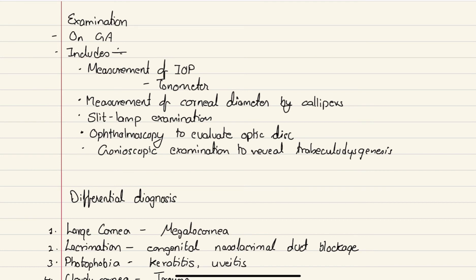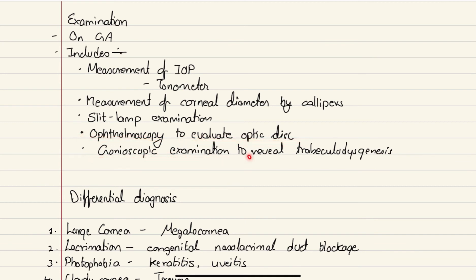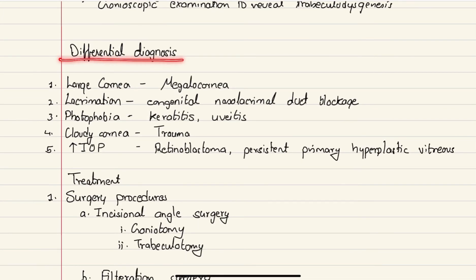Examination is done under general anesthesia and includes measurement of intraocular pressure by tonometer — which is increased in glaucoma. Since there is corneal enlargement, measurement of corneal diameter by calipers is also done. Slit lamp examination identifies defects inside the eye, ophthalmoscopy evaluates the optic disc, and gonioscopic examination reveals trabecular dysgenesis or the structures of the angle of the anterior chamber.